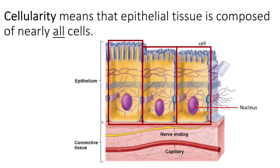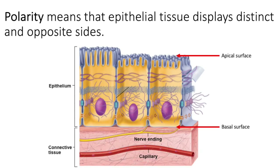The cells are stacked on top of each other if it's a layered epithelial tissue, and there's just no space between them. When we get to connective tissue, the opposite will be true — there are much fewer cells but a lot of extracellular matrix. This characteristic of cellularity provides epithelial tissue its really important function: protection. It creates a wall — if it's on your skin, it's the barrier between you and the outside world.